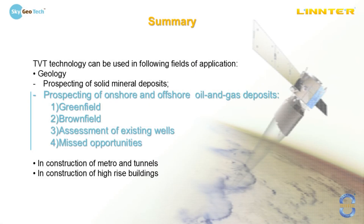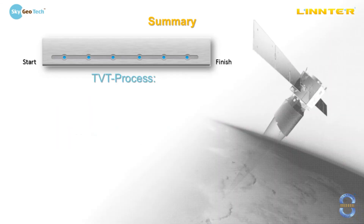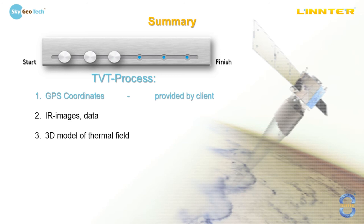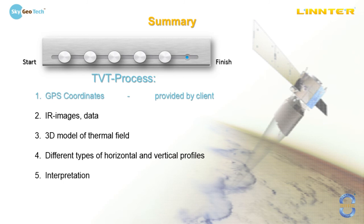To summarize, TVT technology can be used in prospecting of oil and gas deposits onshore and offshore, including green fields, brown fields, assessment of existing wells, and detecting so-called missed opportunity zones. The first step — and the only one the client needs to participate in — is providing GPS coordinates of the license block. Then we get infrared images and other required data including terrain maps and bathymetry. We build a 3D model of thermal field, then build different horizontal sections and vertical profiles. Our scientific team makes interpretation of the data and finally we present results and give recommendations.